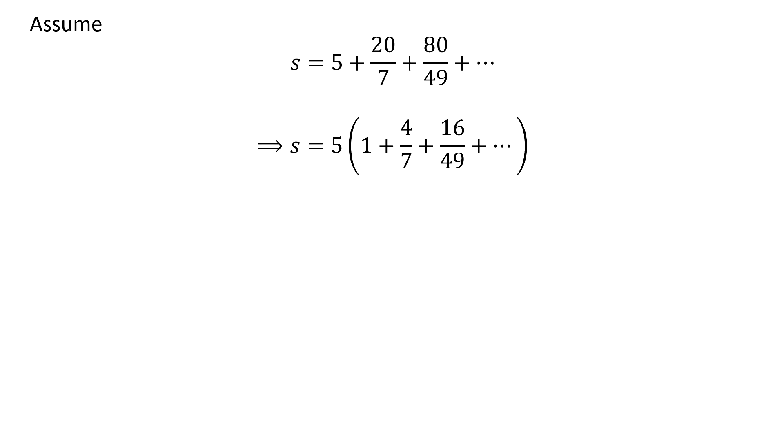Taking out the common factor 5 gives us S is equal to 5 times 1 plus 4 upon 7 plus 16 upon 49 plus so on.